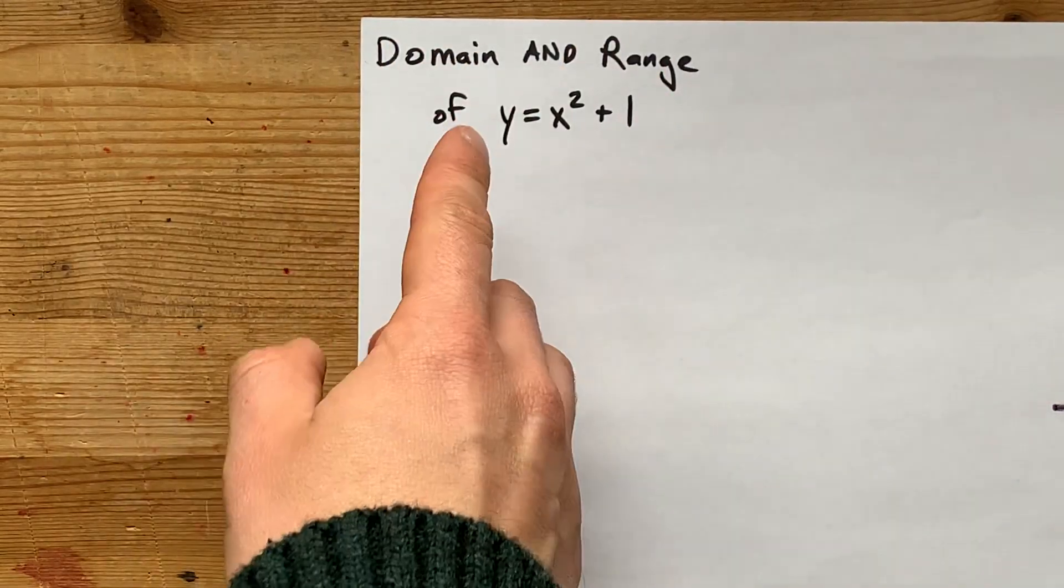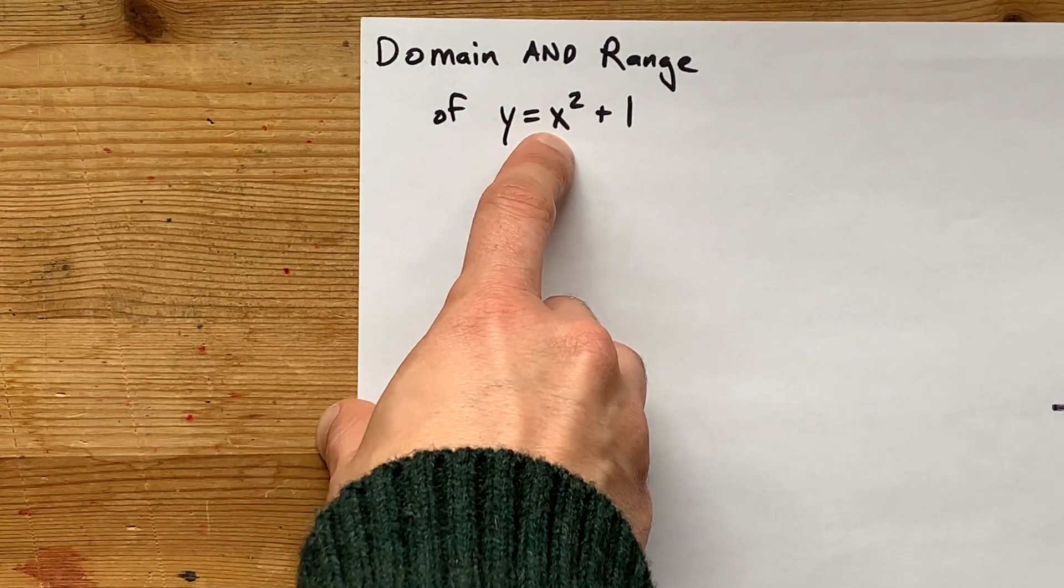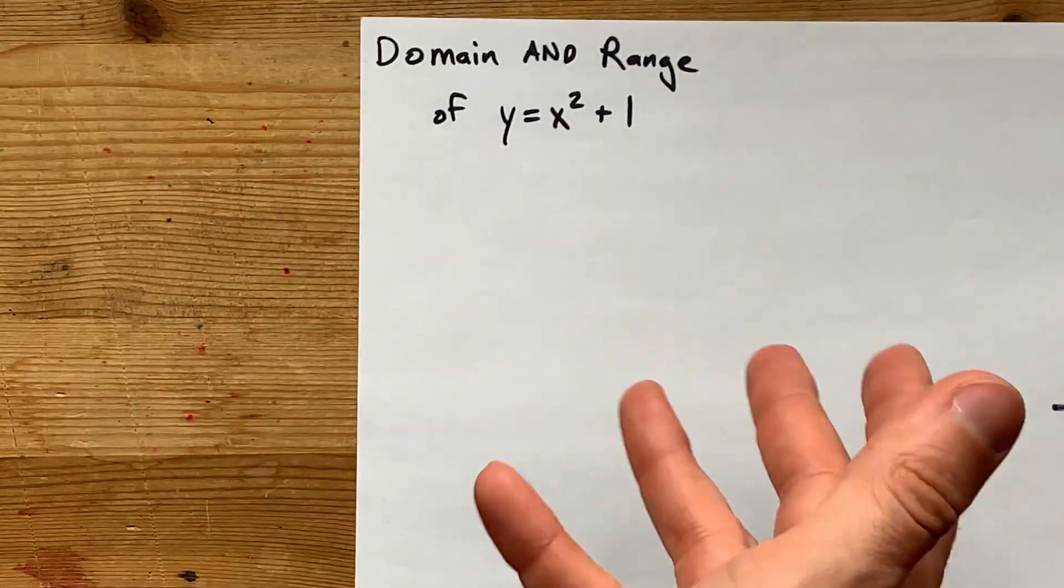Let's do the domain and range of y equals x squared plus 1. Are there any numbers that you can't square? No, all numbers are something that you can multiply by themselves.